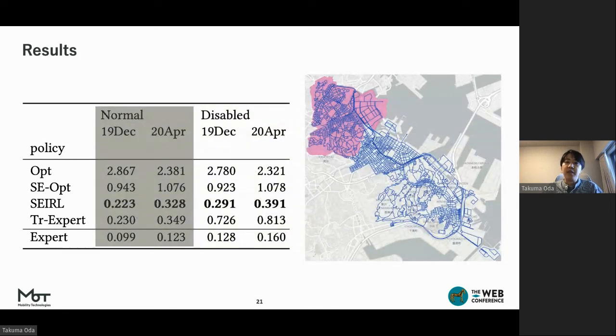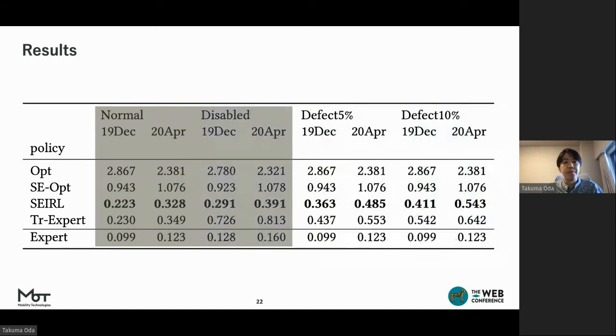In order to evaluate the impact of larger change in dynamics, we next conducted an experiment in which demand in sub-region, the pink area in the figure, is actually eliminated. Since the spatial distribution of potential demand changes significantly, the actual policy is expected to be very different from those in the training dataset. The result is shown in the disabled column in table, where SAIL is the best significantly ahead of training experts. This demonstrates that our approach has a high generalization performance.